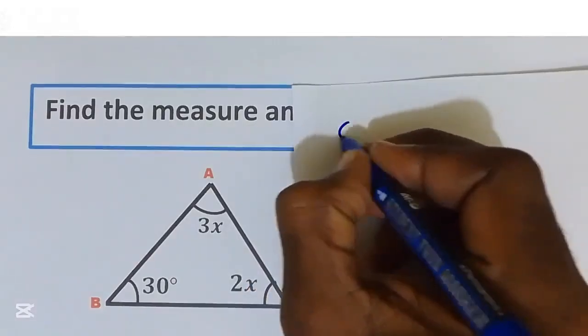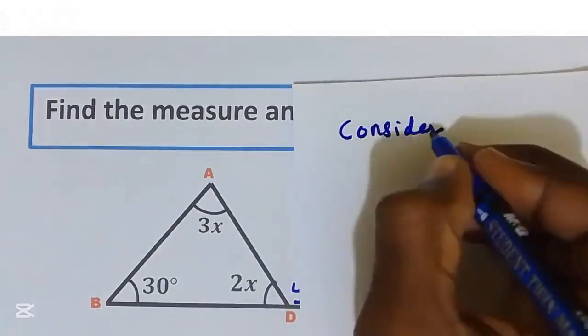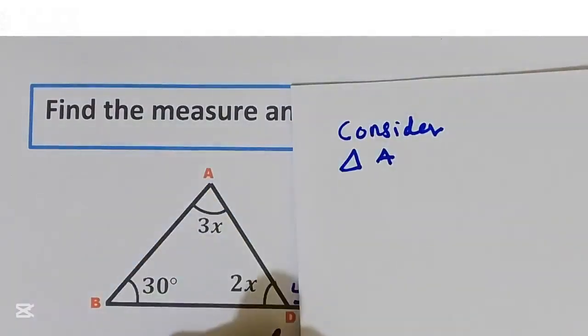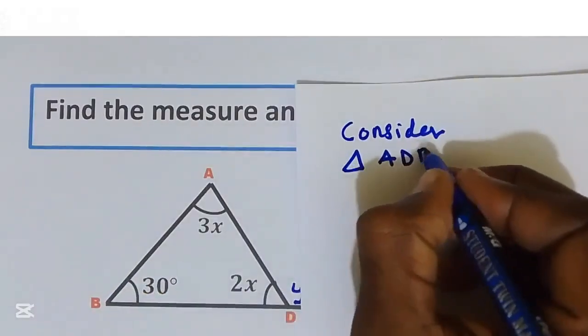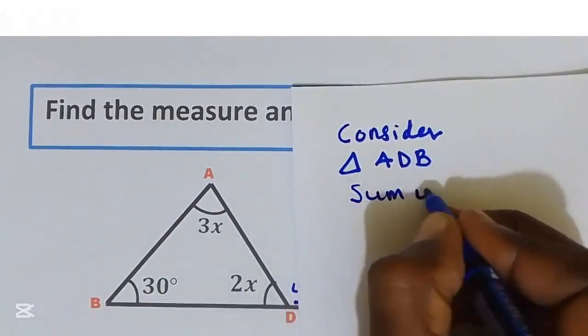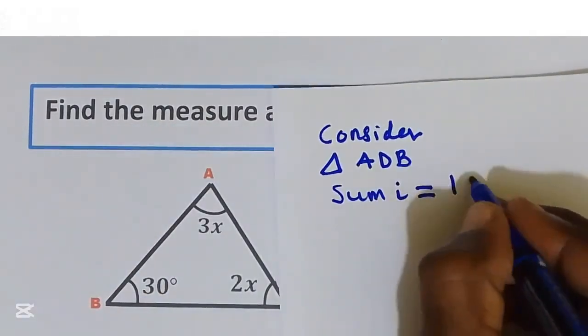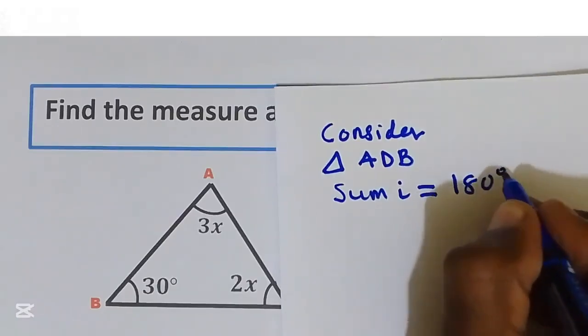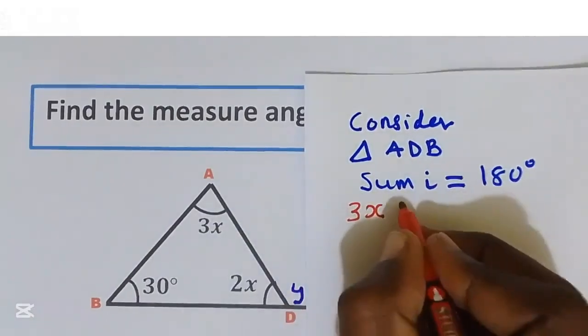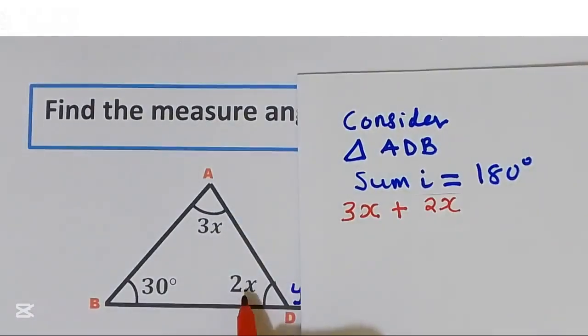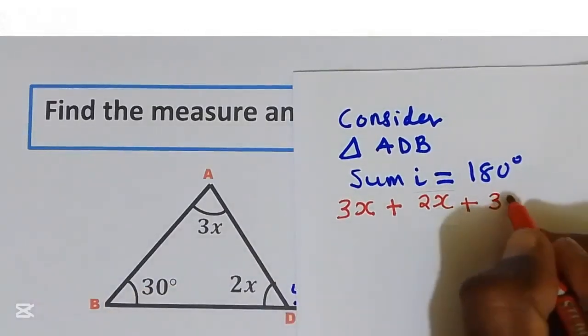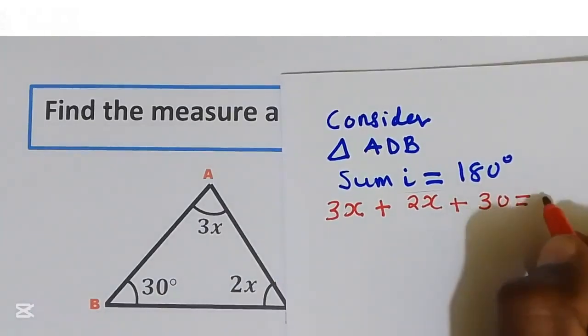Consider triangle ABD. Sum of interior angles is equal to 180 degrees. That is 3x plus 2x plus 30. This is equal to 180 degrees.